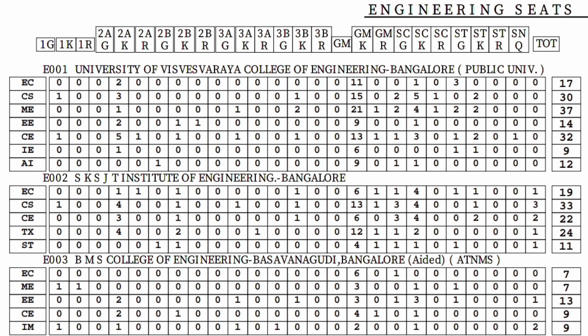For UVCE, in brackets after the name it is written 'public university' because it is a university. In BMS College of Engineering, Basavanagudi, Bangalore, it says 'aided' — so that seat matrix is for the aided course, as they have two courses: aided and unaided. In the bracket it also says ATNMS, which means autonomous college. So any college which is autonomous will show 'autonomous' in brackets.